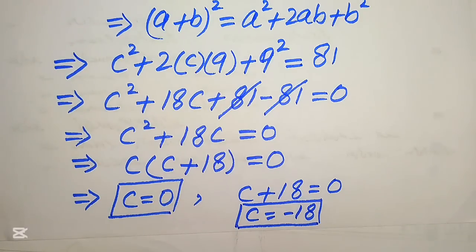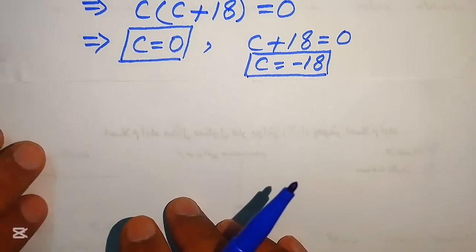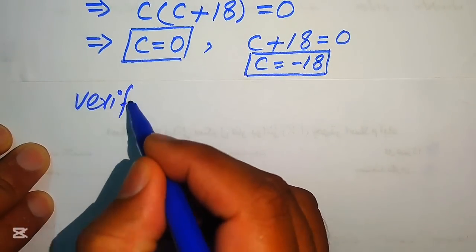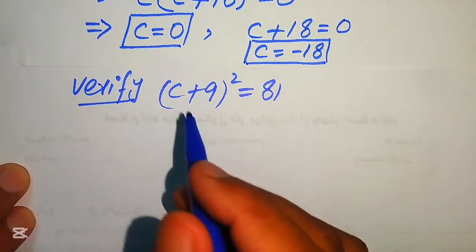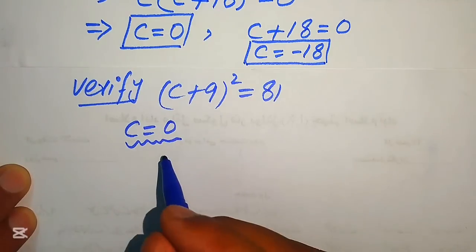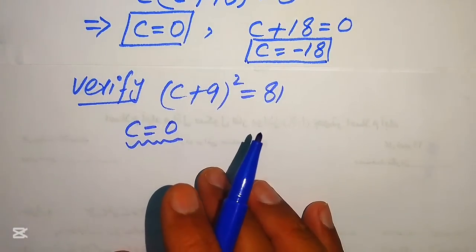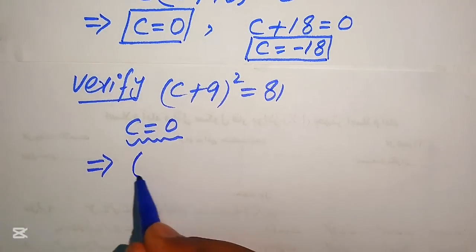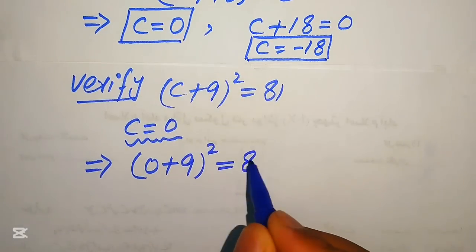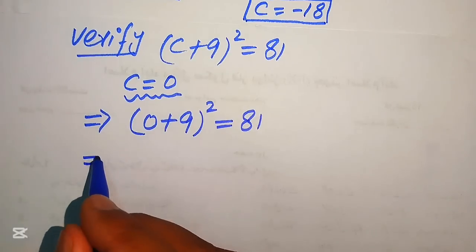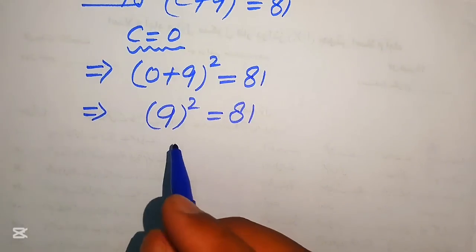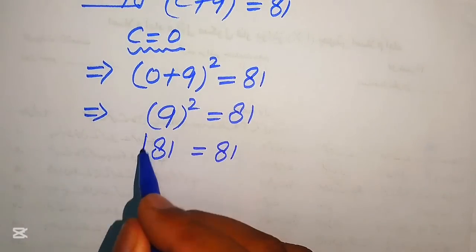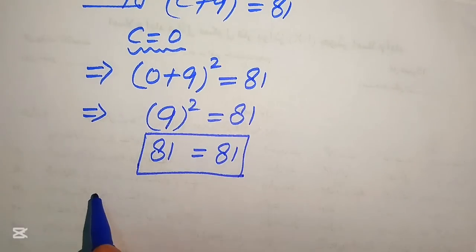Now we verify these values. The given statement is (c + 9)² equals 81. First, substituting c equals 0 into the left hand side: (0 + 9)² equals 9² equals 81. We get 81 equals 81, confirming that c equals 0 satisfies the given equation.